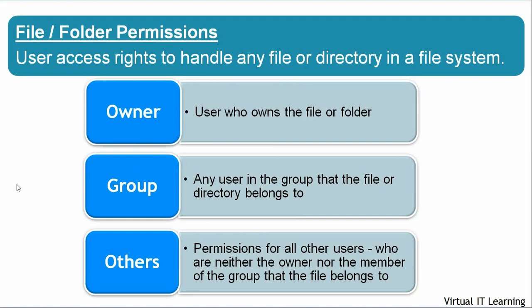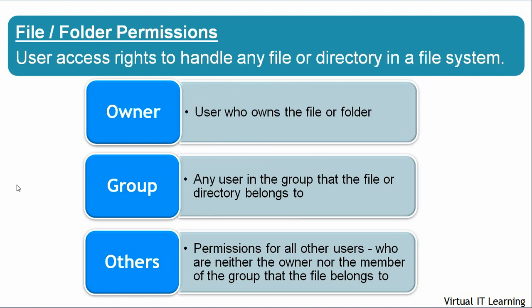Now we will discuss file permissions. File system permissions refer to the user access rights to handle any file or directory in a file system. In Unix and Linux operating systems there are three types of permissions: owner, group, and others. Owner refers to the user who owns the file or folder. Group refers to permissions for any user in the group the file belongs to. Others refers to all other users who are neither the owner nor a member of the group.